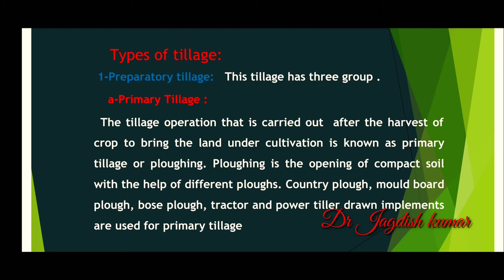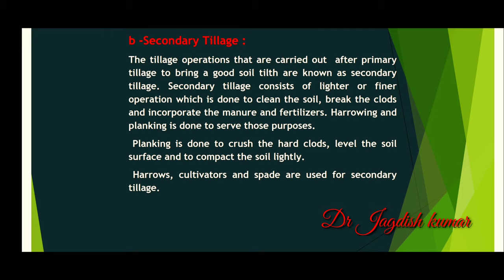Now come to secondary tillage. The tillage operations that are carried out after primary tillage to bring a good soil tilth are known as secondary tillage. Secondary tillage consists of lighter or finer operations which are done to clean the soil, break the clods, and incorporate the manures and fertilizers. Harrowing and planking are done to serve these purposes. Planking is done to crush the hard clods, level the soil surface, and compact the soil lightly. Harrows, cultivators, and spades are used for secondary tillage.